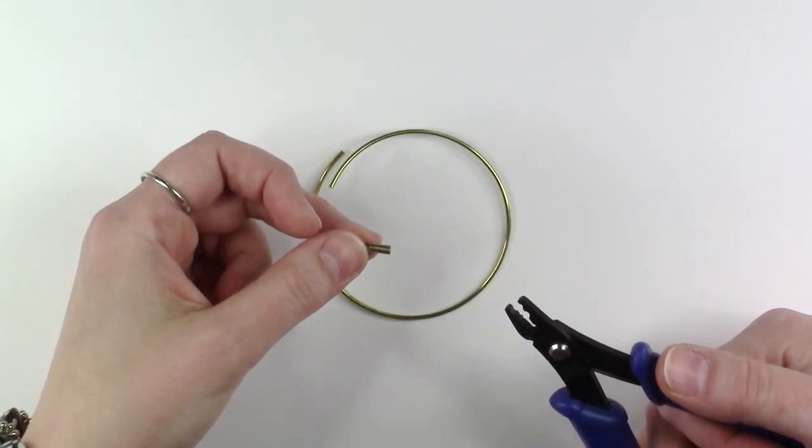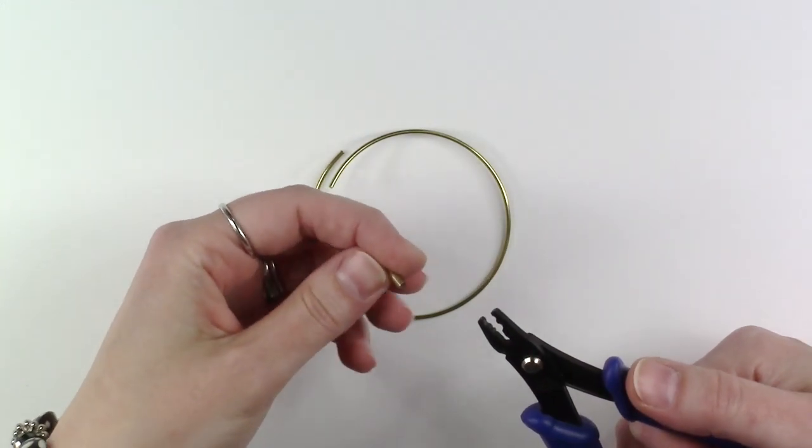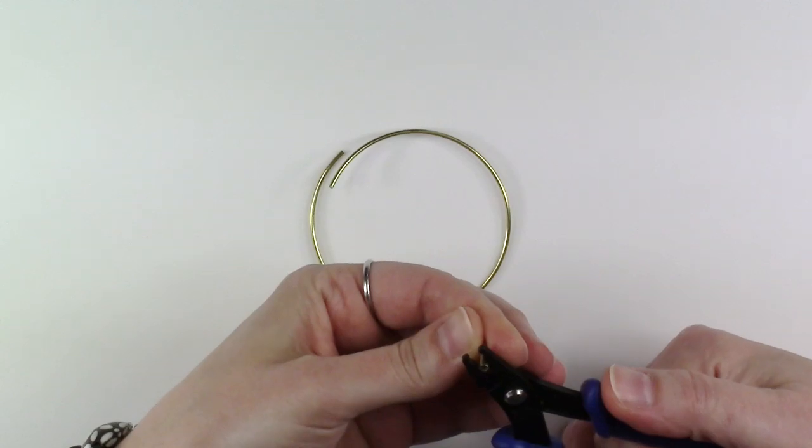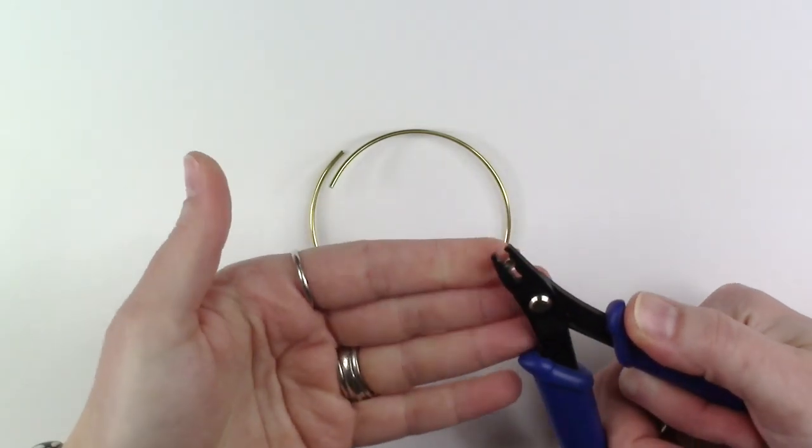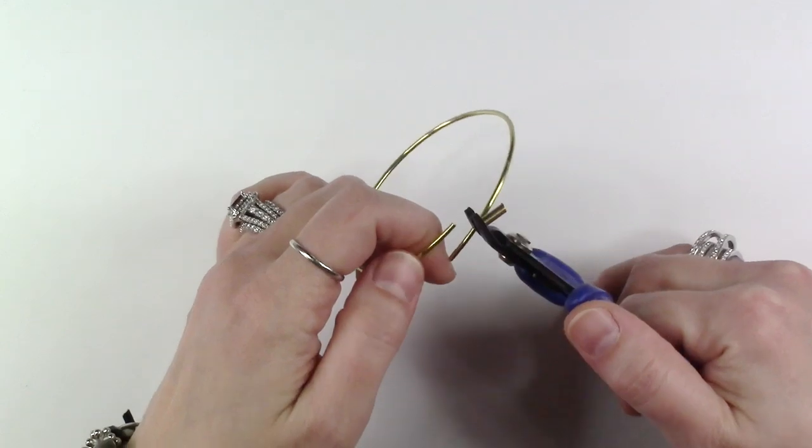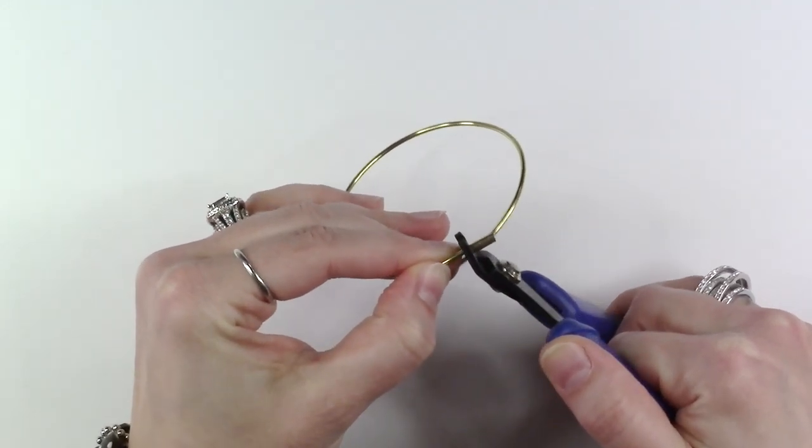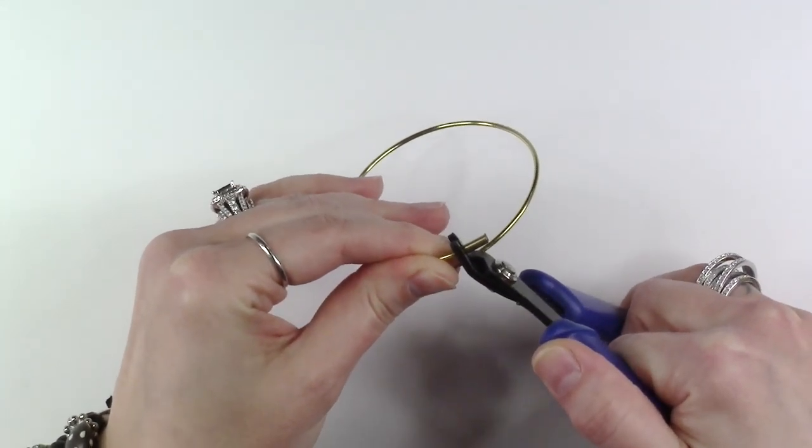Once you have created your bangle shape, you're ready to connect your ends with your crimp connector. Take the crimp connector and place it into the back notch of your crimping pliers and then place the end onto one end of your bracelet. You only want to insert the end of the bracelet halfway into the crimp connector.